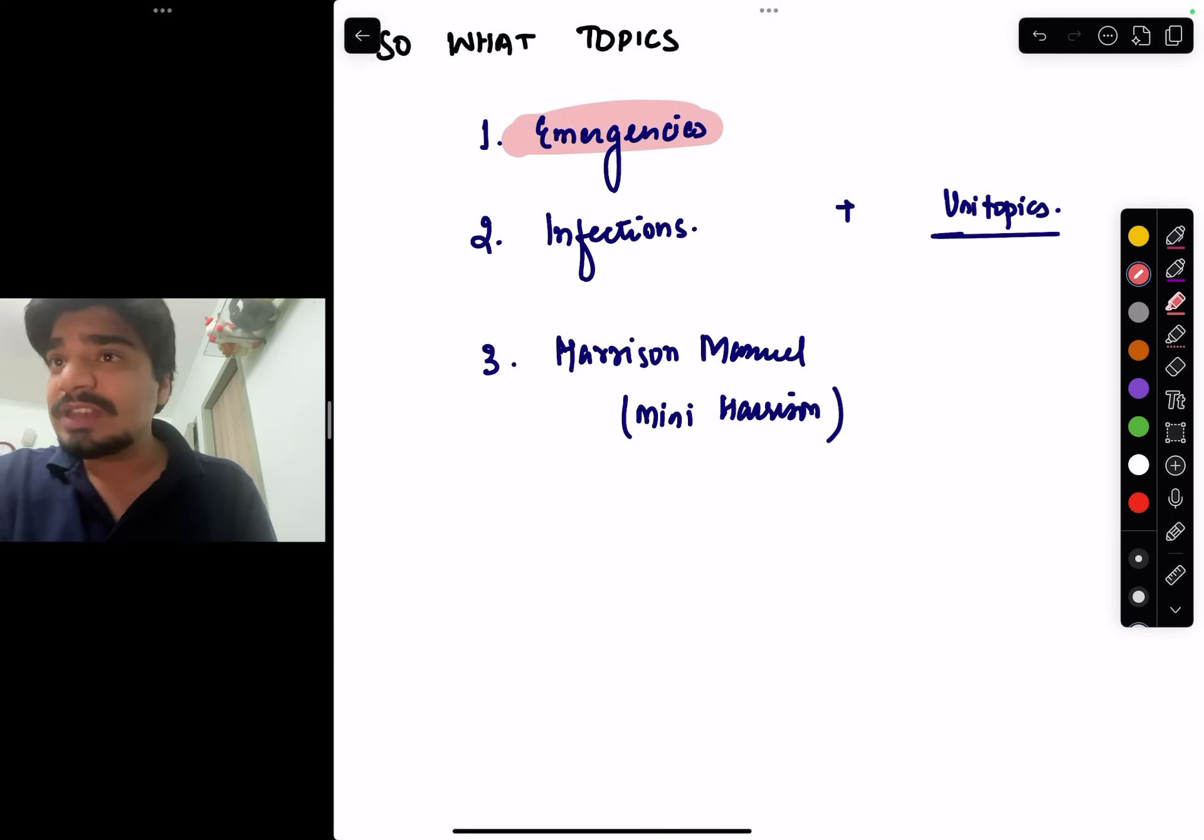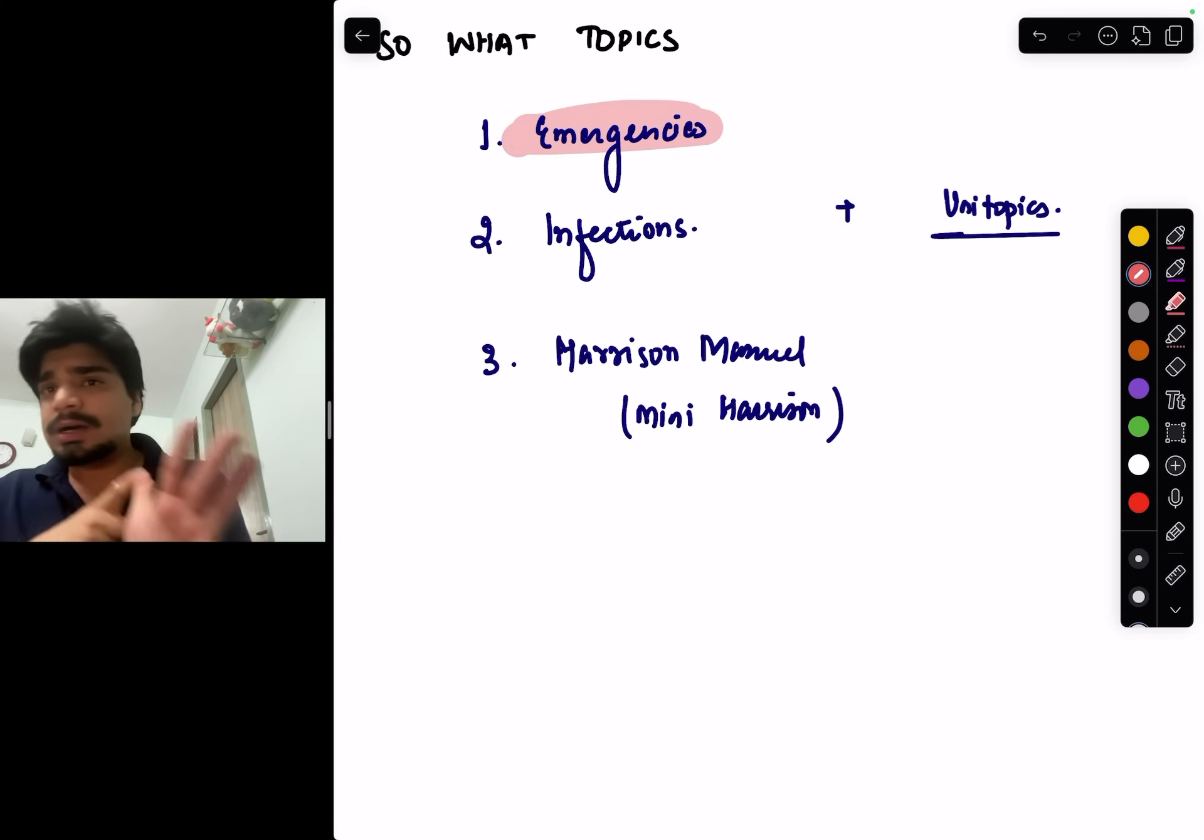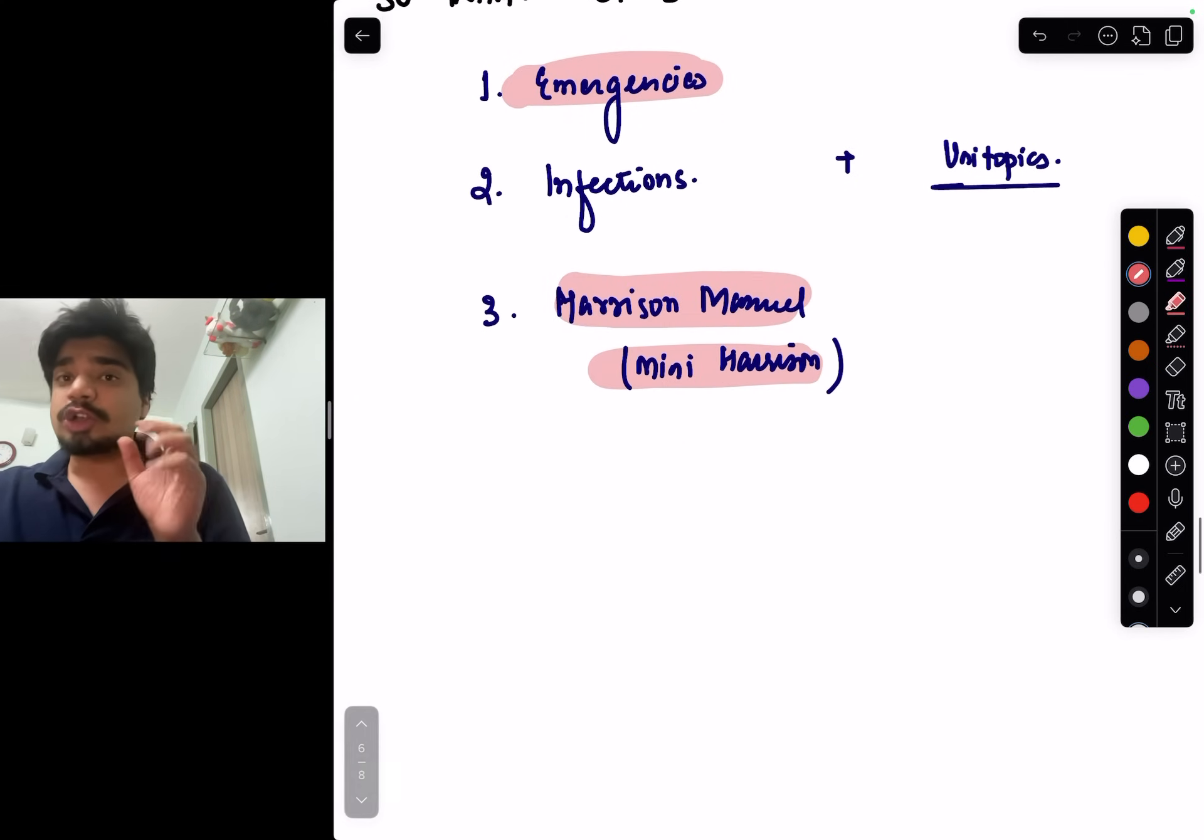So what are the topics which are core medicine? They are your emergencies, treatment guidelines of stroke, coronary artery disease, MI, things like that, infections, and the topics which are there in mini Harrison, which is your Harrison Manual. They are the essential topics which you should consider.